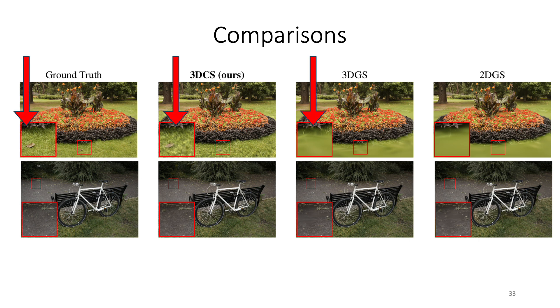Note how in this flower scene, the top row, the 3D Convex Splatting can model very high-frequency components that have sharp transitions, while the 3D Gaussians and 2D Gaussians fail in these scenarios.